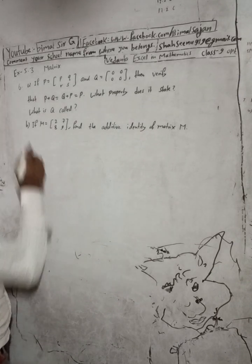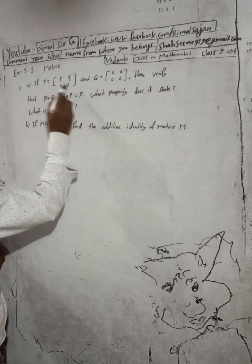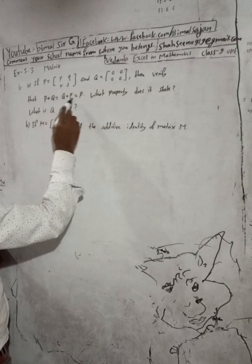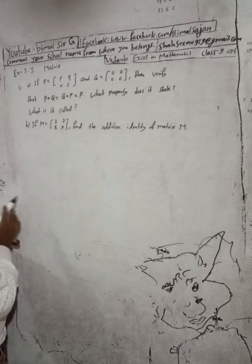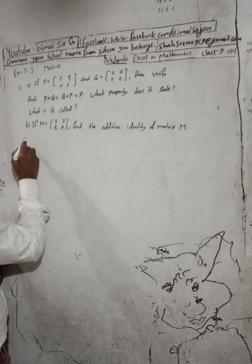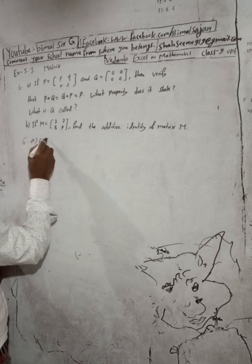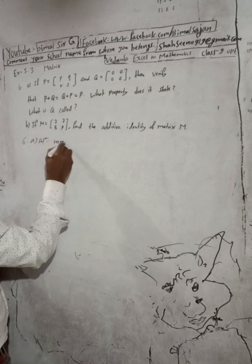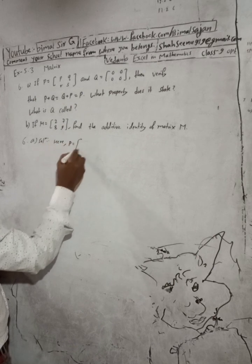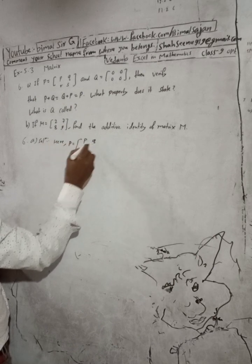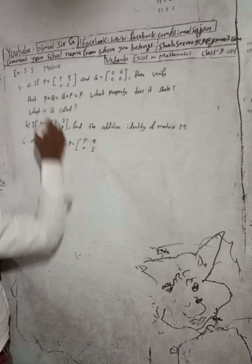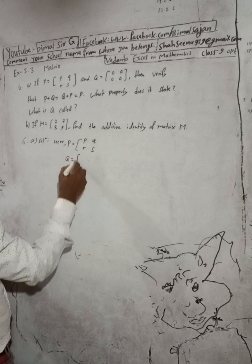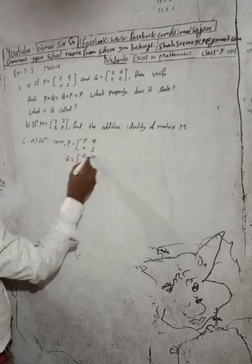Okay, here for now, question 6a. If P is equal to [p, q, r, s] and Q is equal to the zero matrix [0, 0, 0, 0, 0], then verify that P plus Q equals Q plus P equals P. What property does it state and what is Q called?